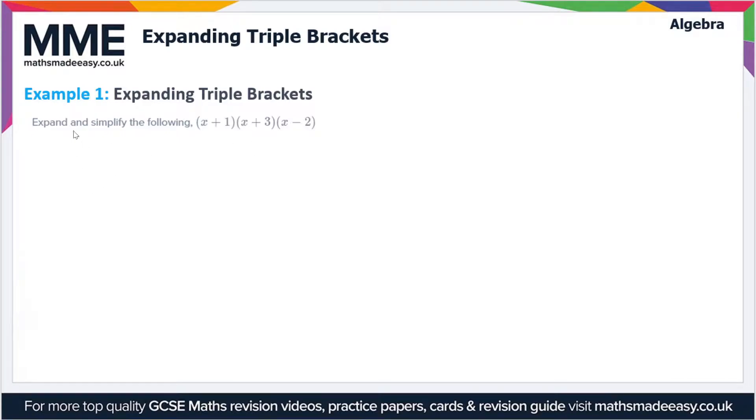Let's start by looking at this example where we have to expand (x + 1)(x + 3)(x - 2). I'm going to rewrite the expression here. Now effectively what we're going to do here is treat this as a set of double brackets and a single bracket on its own. Let's just draw a line in here to say we're going to ignore this (x - 2) bracket for now and we're going to treat (x + 1)(x + 3) as a double bracket.